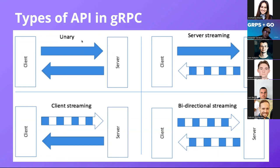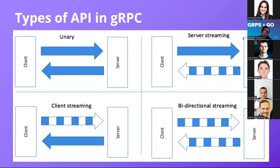Using HTTP/2 allows having different types of APIs in an RPC. The first one is unary — similar to REST, we have a client that does a request and a server that responds. Another benefit is server streaming, where the client does a request and the server responds with a stream of data sequences.